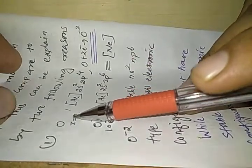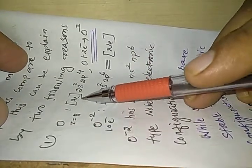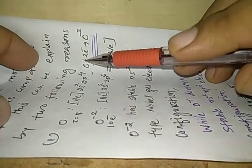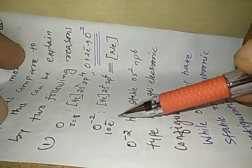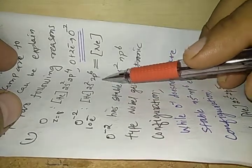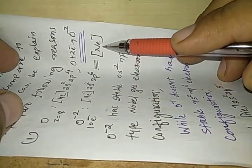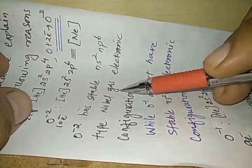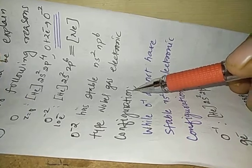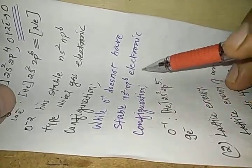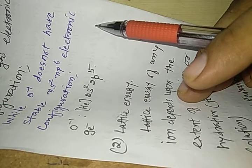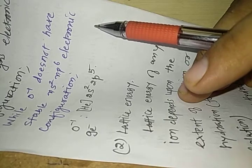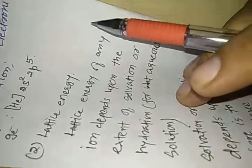Reason number 1: Oxygen has atomic number 8 and electronic configuration helium 2s2 2p4. When oxygen takes 2 electrons it forms O minus 2, which has 10 electrons. The electronic configuration would be helium 2s2 2p6, which is similar to neon. O minus 2 has a stable ns2 np6 noble gas electronic configuration, while O minus 1, with 9 electrons and configuration helium 2s2 2p5, does not have the stable noble gas electronic configuration. So O minus 2 is stable because it has achieved the noble gas electronic configuration.